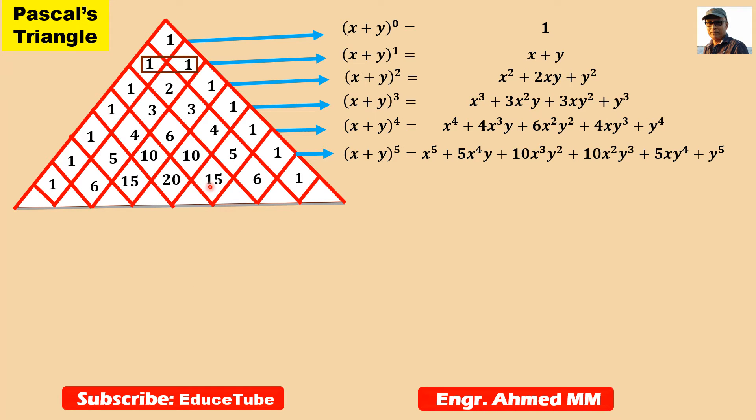So we will expand a binomial expression. Here it is given like this: Determine, using Pascal's triangle method, the expansion of (2a - 3b)^5.